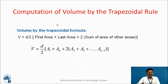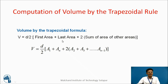Now let us see how one can compute the volume of water. The first simple rule is the trapezoidal rule. According to this rule, volume by trapezoidal formula: V = (d/2) × [first area + last area + 2 times sum of areas of others]. That is, V = (d/2) × [a1 + an + 2(a2 + a3 + ... + an−1)], where d is the vertical distance between two successive contours.